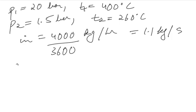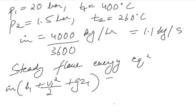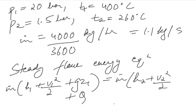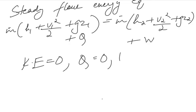So here we will make use of steady flow energy equation. According to that, m.h1 plus v1 square upon 2 plus gz1 equals m.h2 plus q that is the heat transfer plus v2 square by 2 plus gz2 plus w. As in the question it is given that kinetic energy equals 0, heat transfer equals 0 and potential energy equals 0.